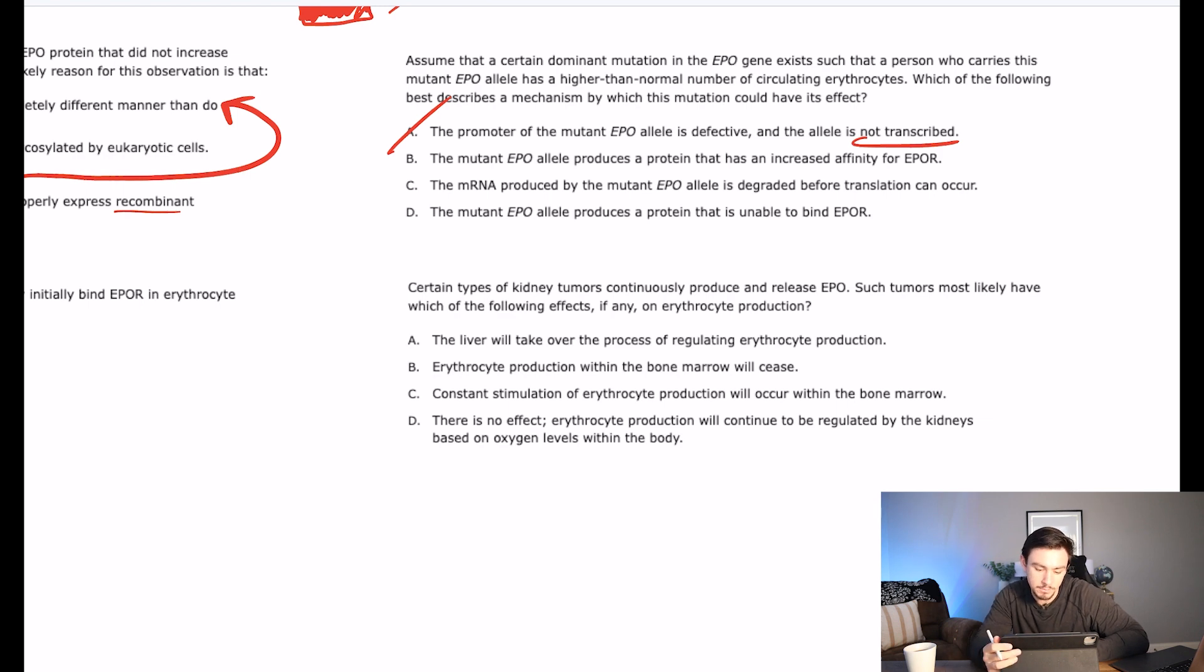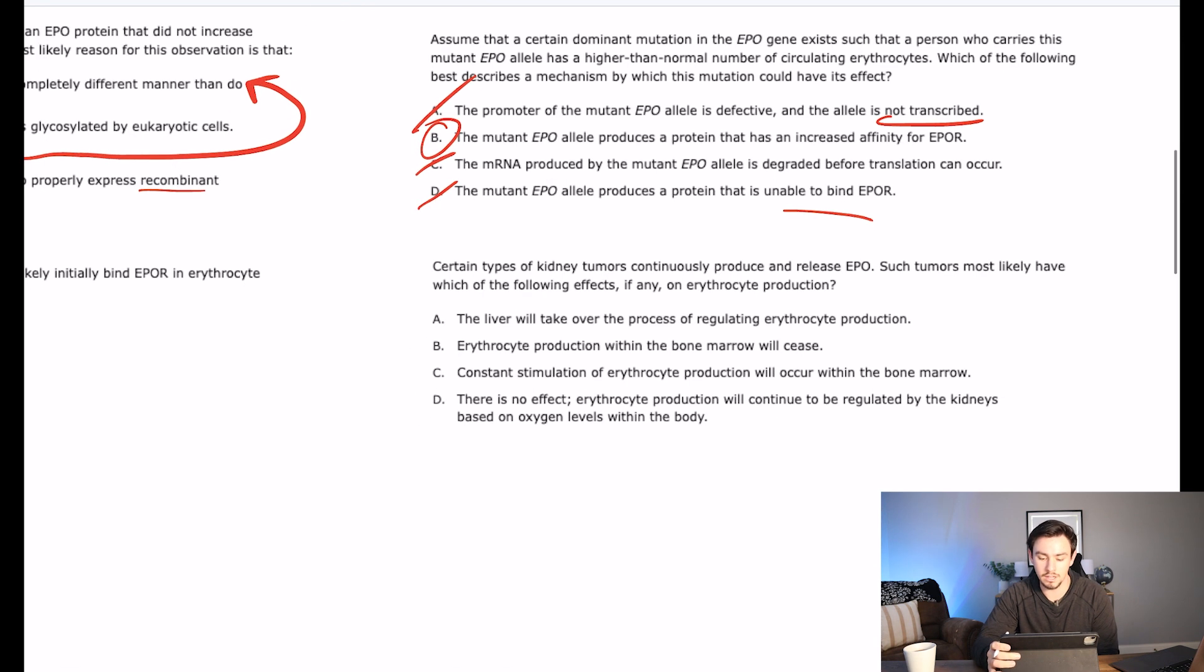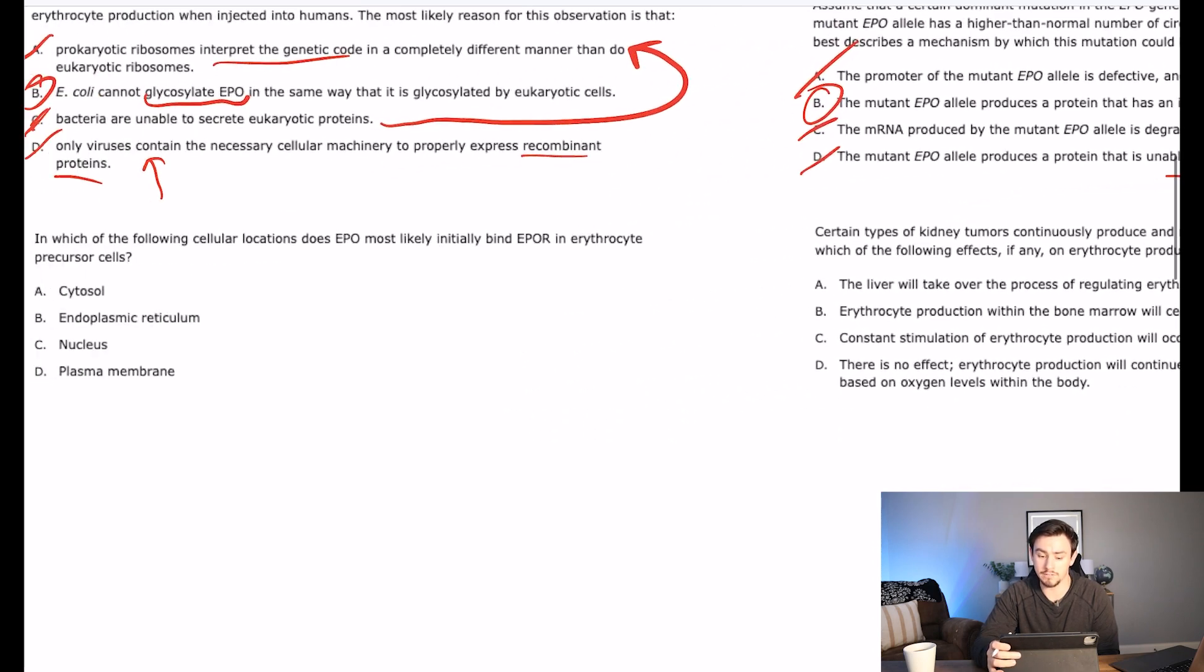B says the mutant EPO allele produces a protein that has an increased affinity for EPO-R. I kind of like that because if we increase the affinity of erythropoietin to its receptor then we're going to increase how often they bind, how frequently genes get transcribed, and red blood cells get made. So I like B. C says the mRNA produced by the mutant EPO allele is degraded before translation can occur. That would decrease it. D says the mutant EPO allele produces a protein that is unable to bind its receptor. That would decrease red blood cells. B is the correct answer. All the others would probably lead to some kind of anemia.